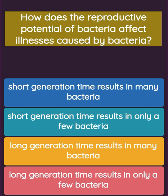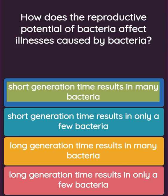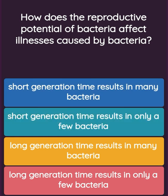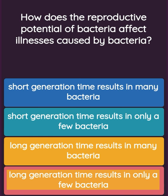Question: How does the reproductive potential of bacteria affect illnesses caused by bacteria? Option one: short generation time results in many bacteria. Option two: short generation time results in only a few bacteria. Option three: long generation time results in many bacteria. Option four: long generation time results in only a few bacteria.